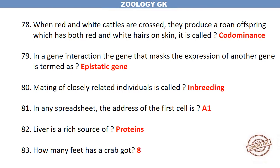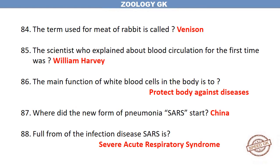In gene interaction, the gene that masks the expression of another gene is termed an epistatic gene. Mating of closely related individuals is called inbreeding. The liver is a rich source of proteins. How many feet has a crab got? 8. The term used for the meat of rabbit is venison. The scientist who explained blood circulation for the first time was William Harvey.